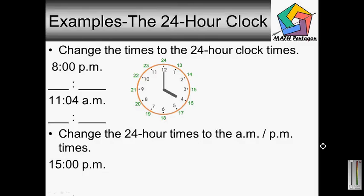Okay, let's do a few examples on the 24 hour clock. We want to change the times to the 24 hour clock time. So we have 8 p.m. and we have to change it to military time.